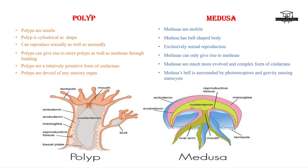The mouth of the polyp is surrounded by tentacles. On the other hand, medusa have a bell-shaped body which resembles an umbrella, and their mouth is located on the underside of the bell. Polyps can reproduce both sexually and asexually.